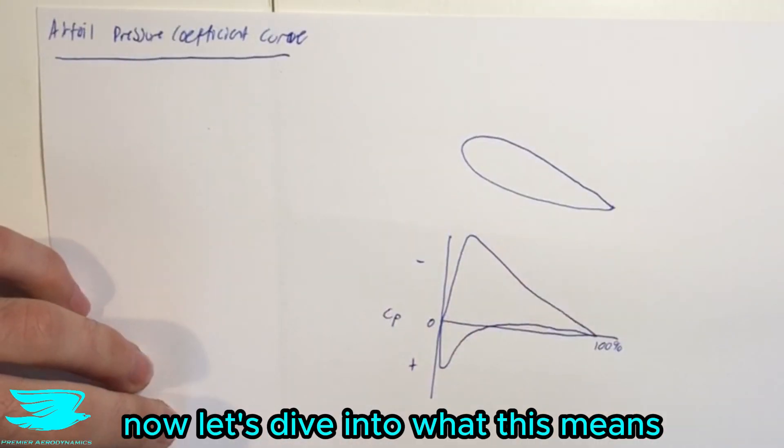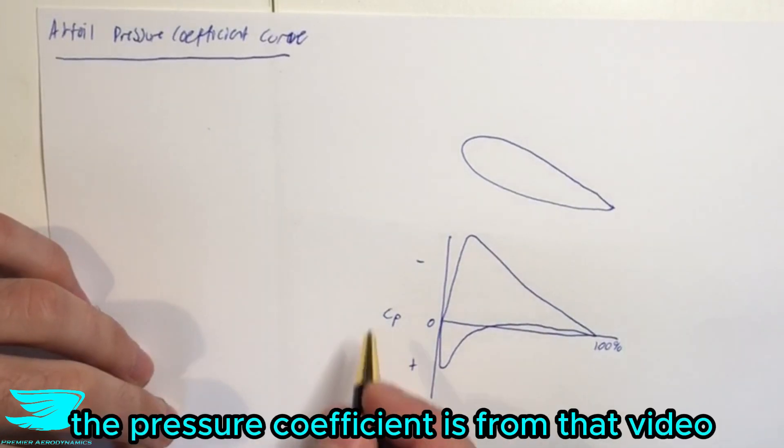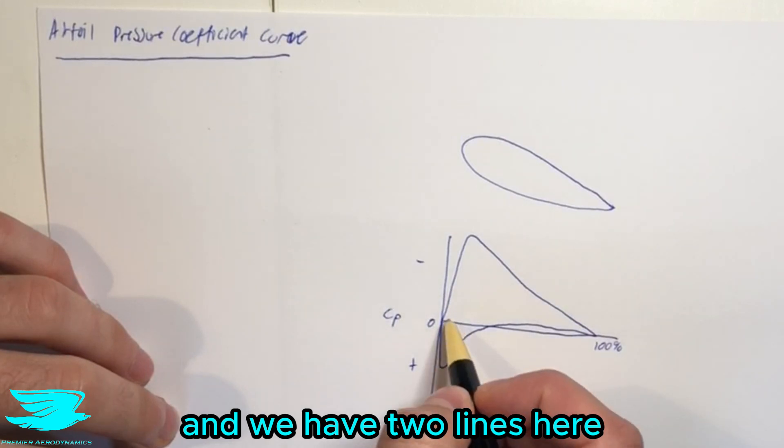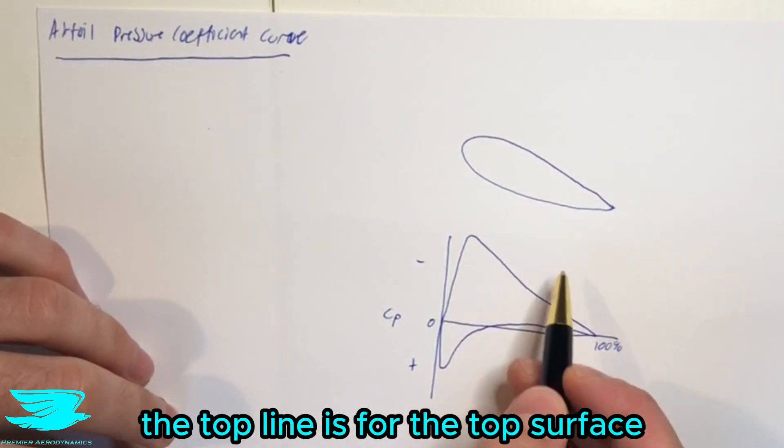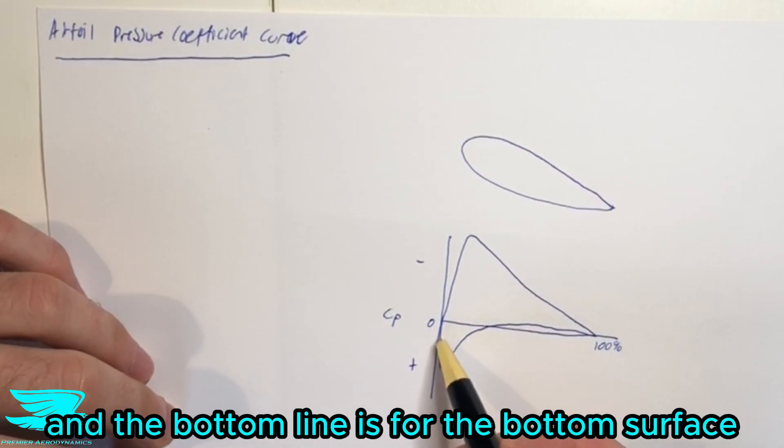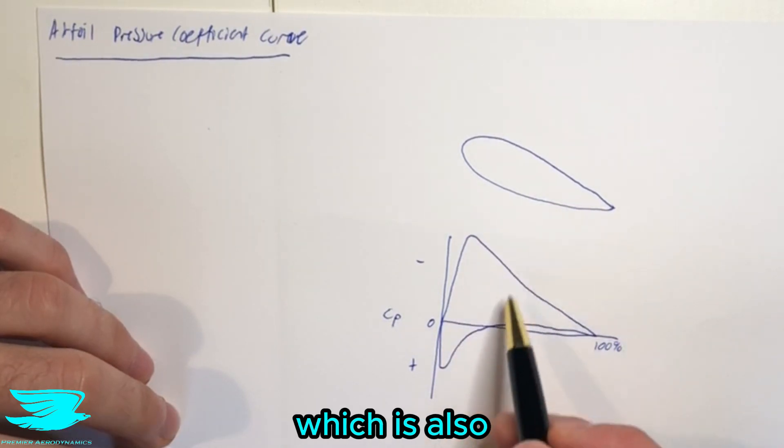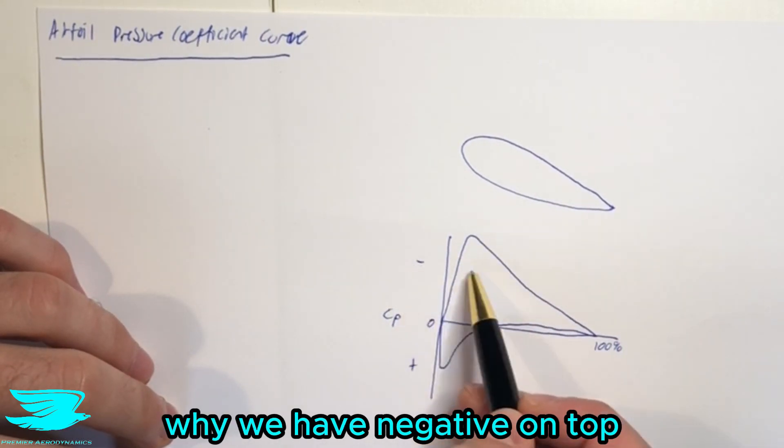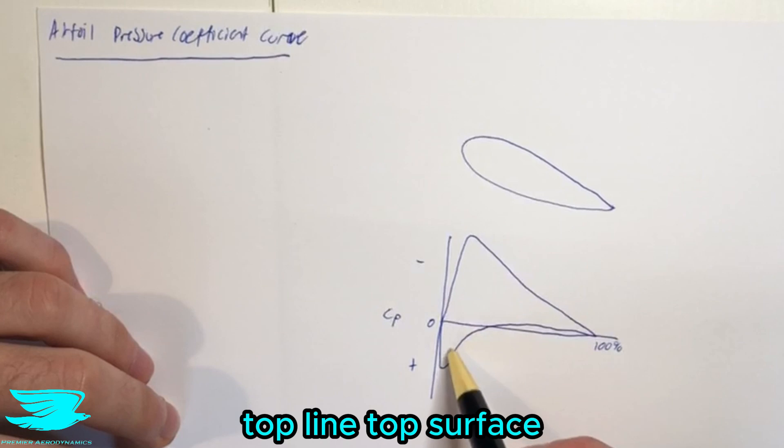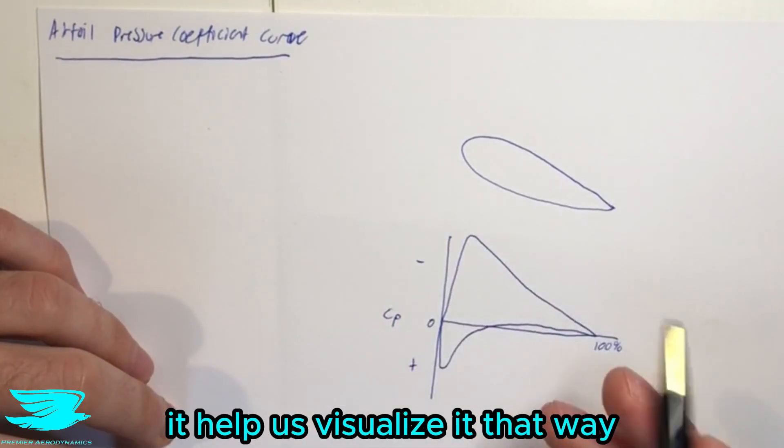So just make sure to watch out for that aspect every time you get one of these curves. Now let's dive into what this means. So I assume you know what the pressure coefficient is from that video. And we have two lines here. The top line is for the top surface and the bottom line is for the bottom surface, which is also, I guess, another reason why we have negative on top, top line, top surface, bottom line, bottom surface. It helps us visualize it that way.